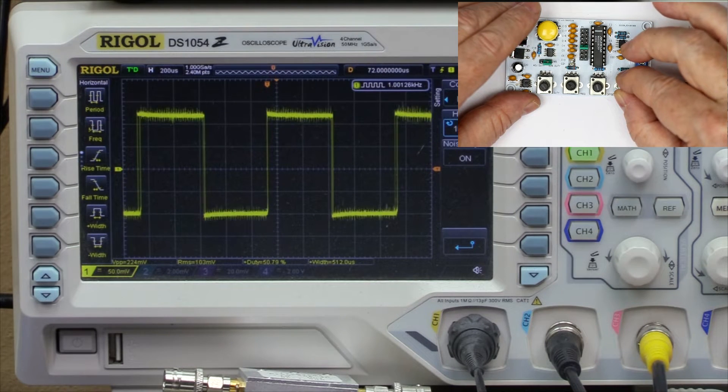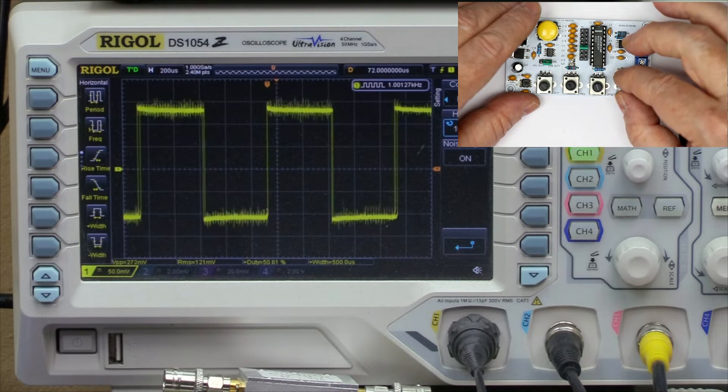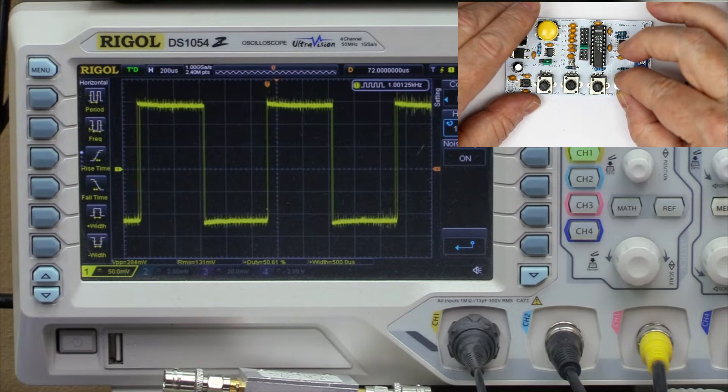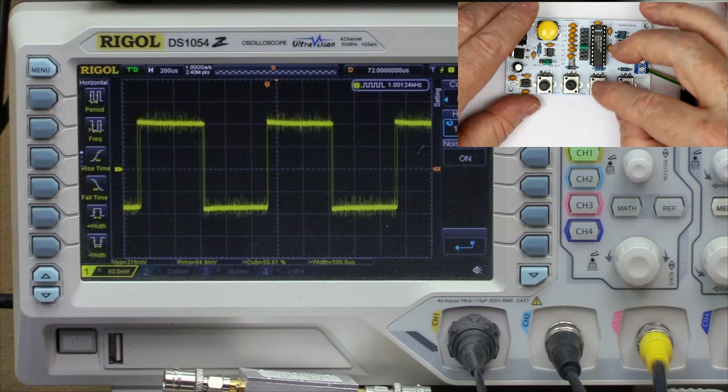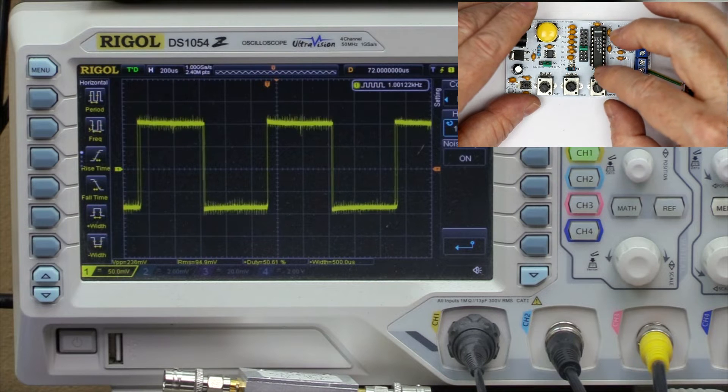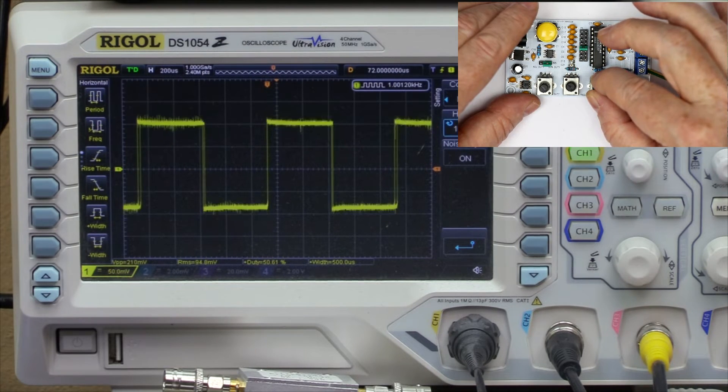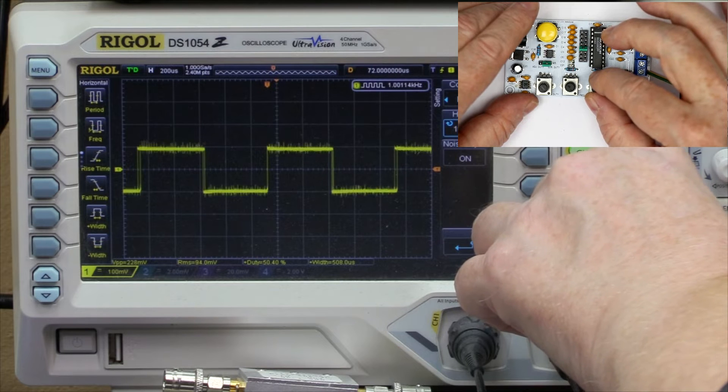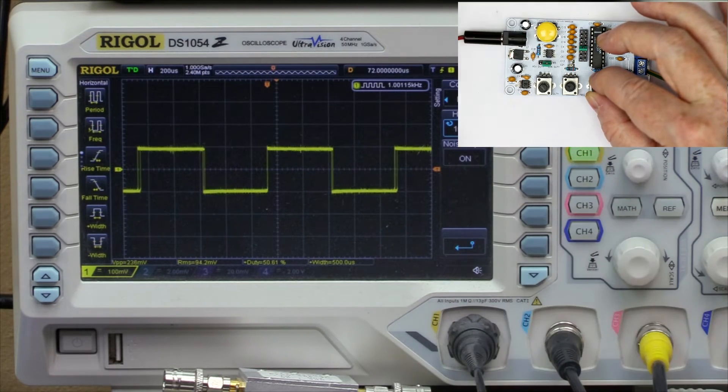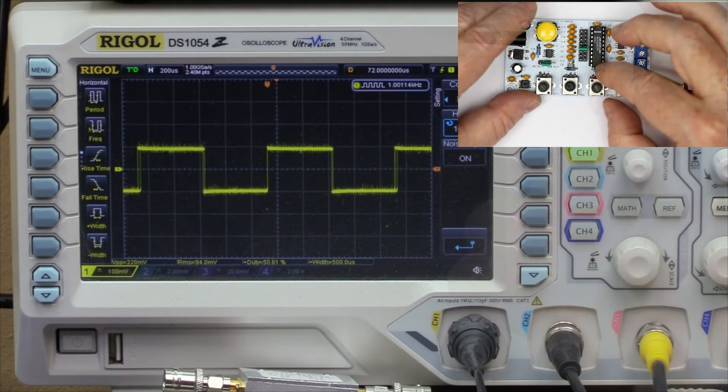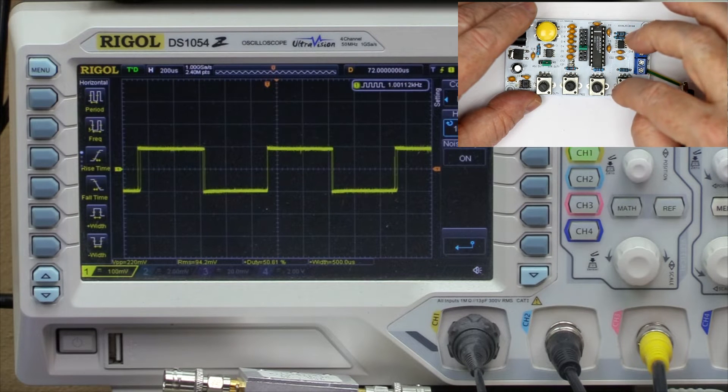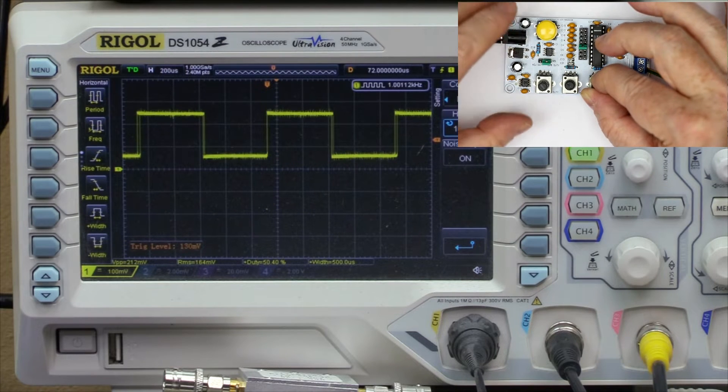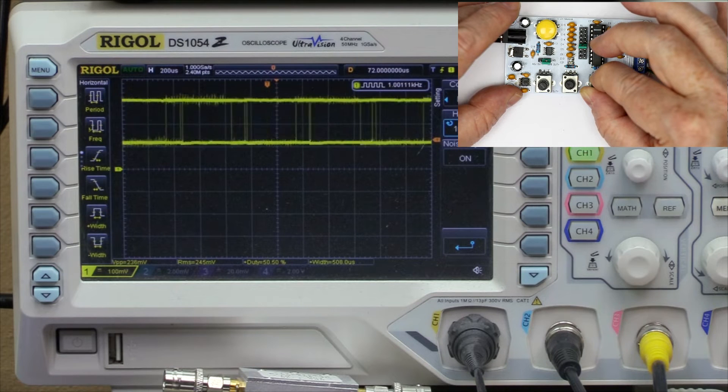This is much better than in the original XR2206 function generator without my modifications, so I'm quite content with that. A nice detail is that in most frequency generators or function generators, the offset is plus minus 5 or plus minus 10 volts, and this is also the case for millivolts signals. But here, because we have a dual op-amp, one is only working for the offset and the second one is only for the gain. That means you can offset your signal around two and a half times of its peak-to-peak voltage.